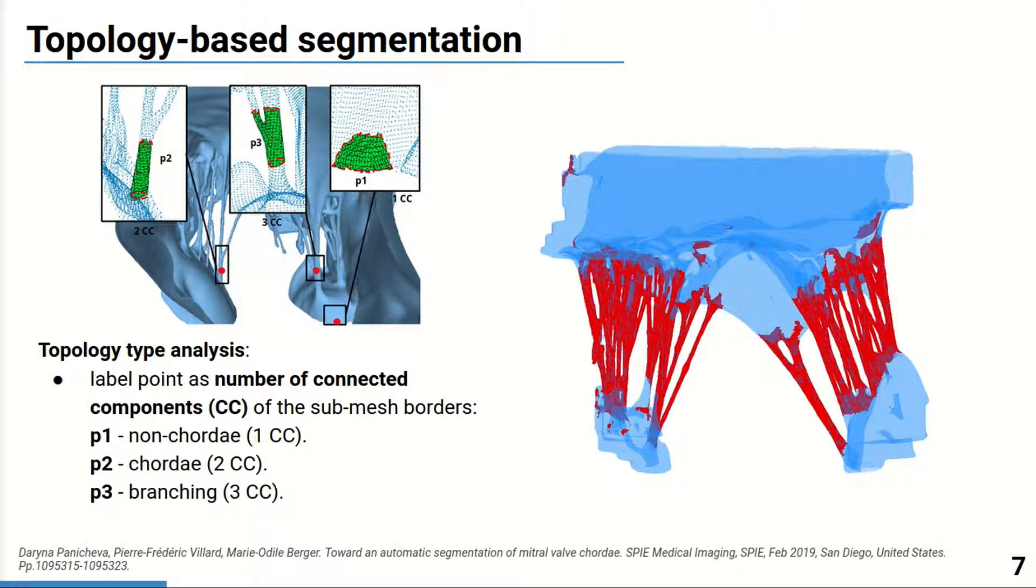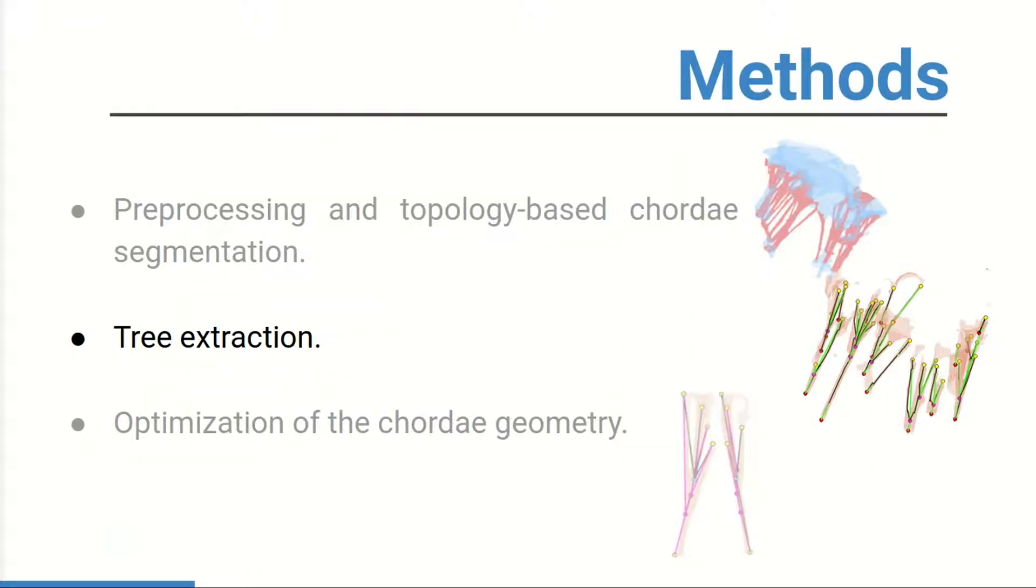Afterwards, the chordae are coarsely segmented using a topology-based procedure. More precisely, the points are labeled according to the topology type of the submesh where they belong, which is the number of connected components of the submesh borders. We keep only those having two and more connected components corresponding to the tubular structures and their branchings. On the right, you can see the result of the segmentation procedure. Tubular structures are in red, which is a starting point for the subsequent step, extraction of the chordae trees.